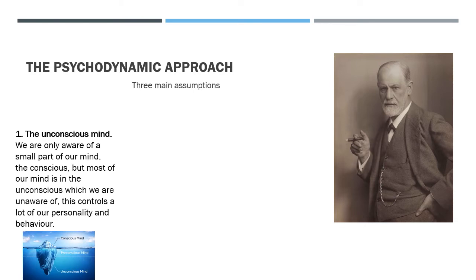According to the psychodynamic approach, we are only aware of a very small part of our mind called the conscious. But most of our mind and behaviour is controlled by the unconscious, which we are unaware of and unable to control. This unconscious mind controls a lot of our personality and behaviours. It can be studied through psychoanalysis, which includes Freudian slips, hypnosis, free association and dream analysis. But it's very difficult to access, so we have to use psychoanalysis to try and reach this area.